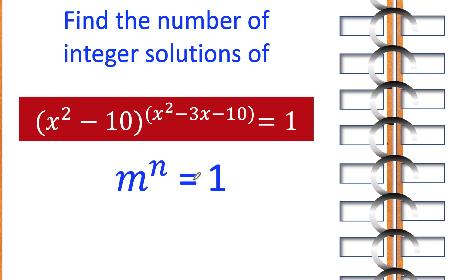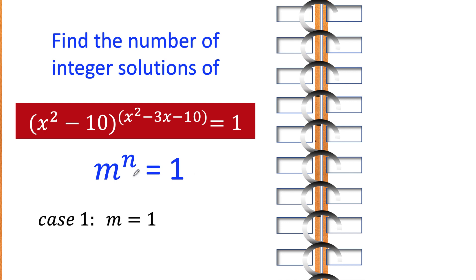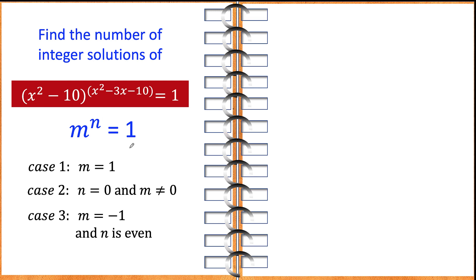How can we make m raised to n equal 1? There are three cases. The first case is when the base itself is 1, because 1 raised to any number equals 1. The second case is when the exponent is 0, because any number raised to 0 equals 1, except when the base is 0. The third case is when the base m equals negative 1, provided that the exponent is an even number, because negative 1 raised to an even number results in positive 1.